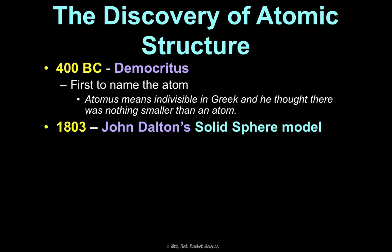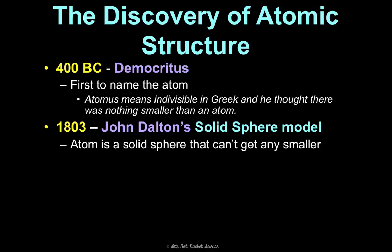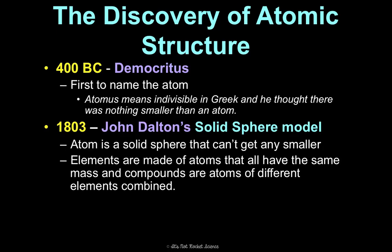In 1803, John Dalton came up with a solid sphere model. He thought that the atom was a solid sphere and it couldn't get any smaller. That's not true, but the other thing he thought is actually true: he said elements are made of atoms that all have the same mass, and compounds are atoms of different elements combined, which is like what we were talking about on the previous slide.